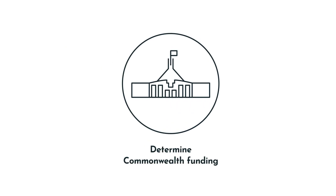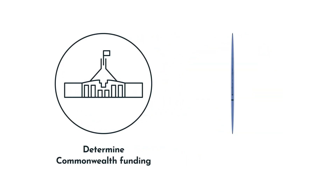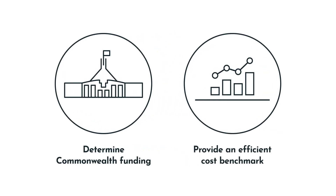The National Efficient Price has two key purposes: to help determine the level of Commonwealth Government funding for public hospital services, and to provide a benchmark for the efficient cost of providing these services.